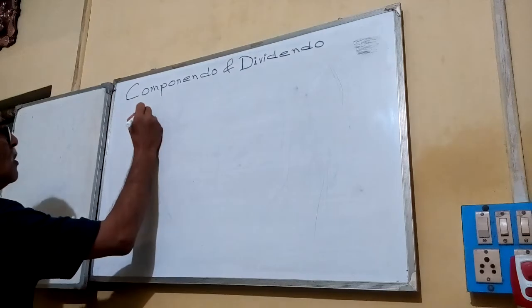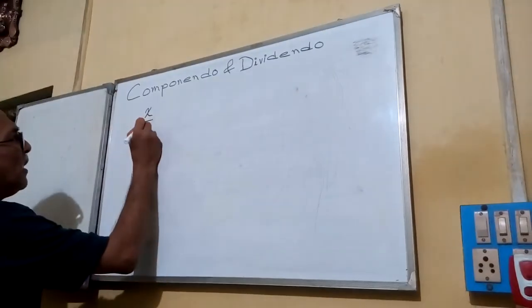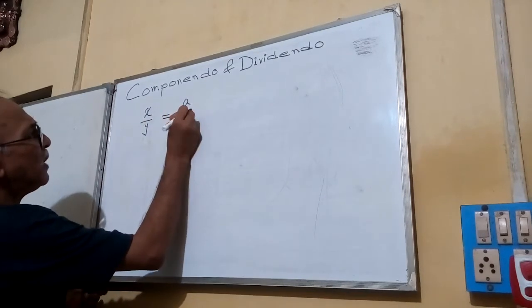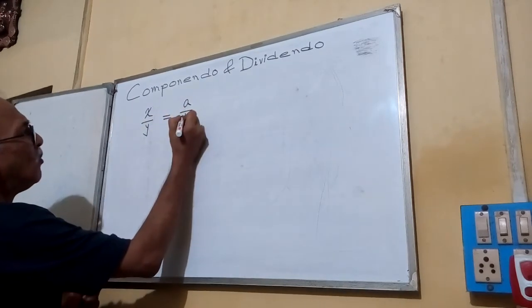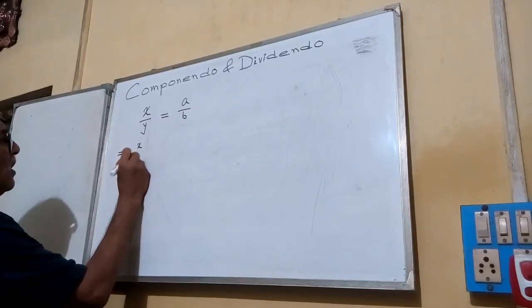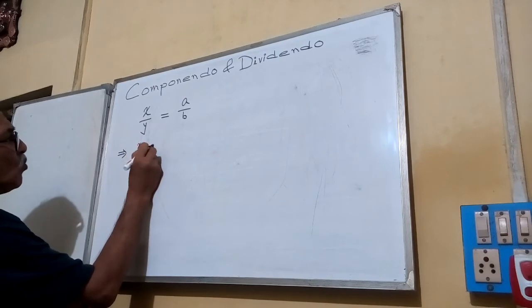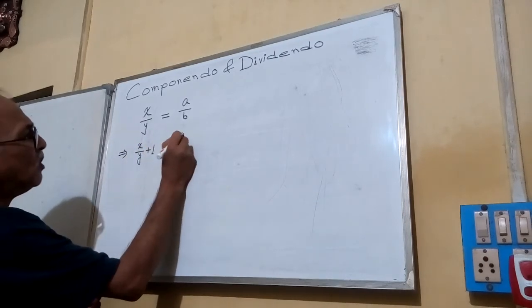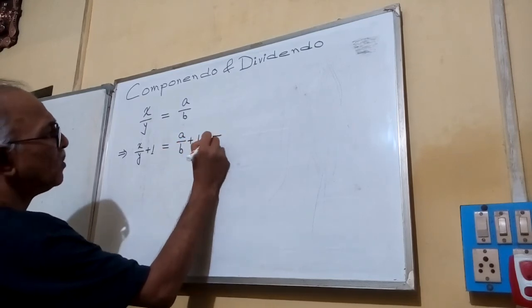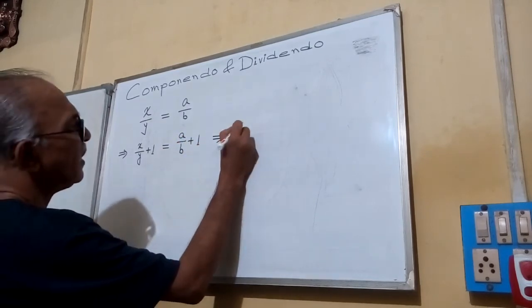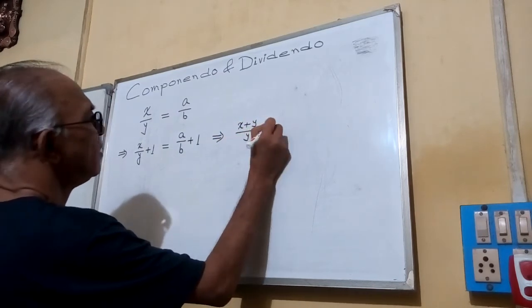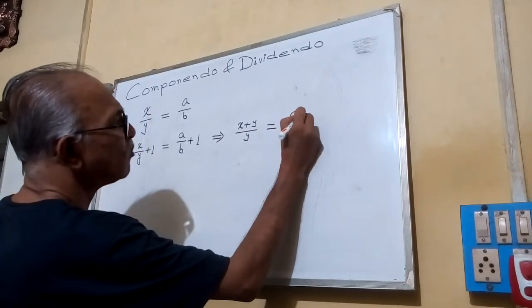Suppose X by Y equals A by B. From here, we can write, adding one to both sides, X by Y plus 1 equals A by B plus 1, which implies X plus Y by Y equals A plus B by B.